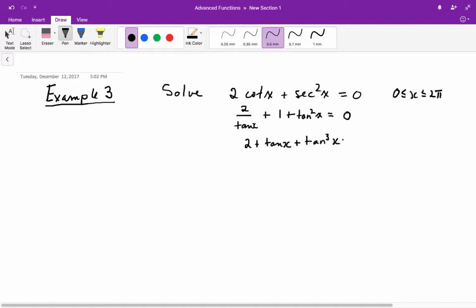Now, normally, we write an equation with highest power first, so we'll switch this around. So tan cubed x plus tan x plus 2 equals 0. Next thing, probably going back to chapter 3 and 4 when we did the factor theorem, I'm going to make a substitution here. I'm going to let u equal tan x. And so, I'm going to rewrite this line. It's u cubed plus u plus 2 equals 0.